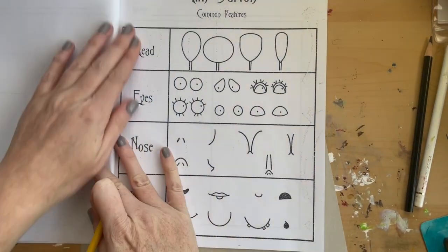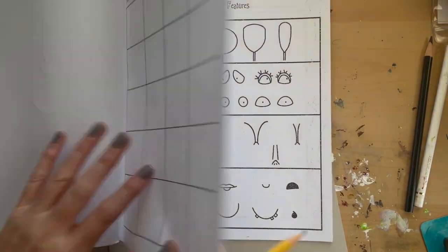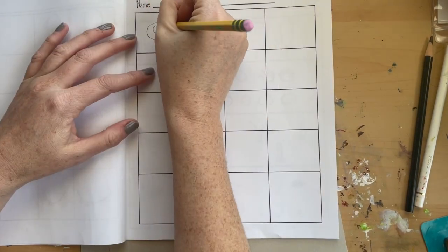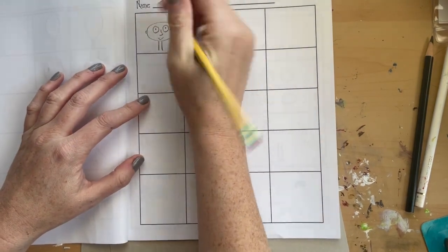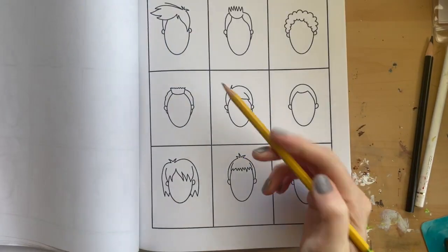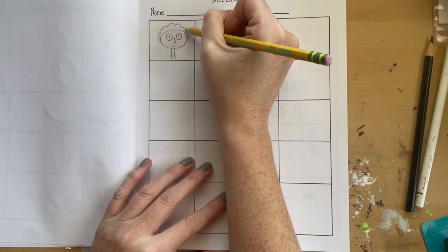Once you've finished practicing those duplications, now you get to have a little fun and create your own versions of people. Using the head, eyes, nose, and mouth examples, you will use those to create different caricatures or animations.